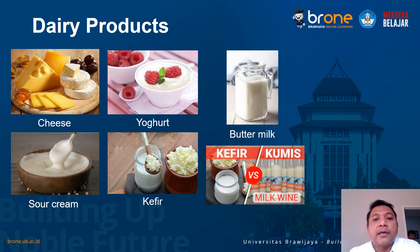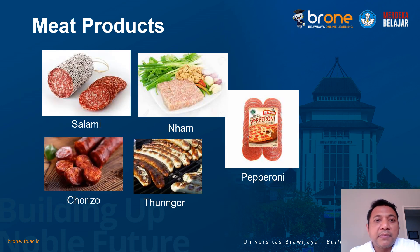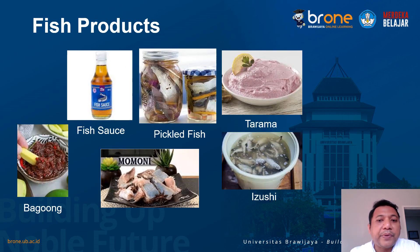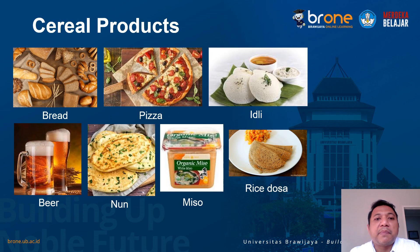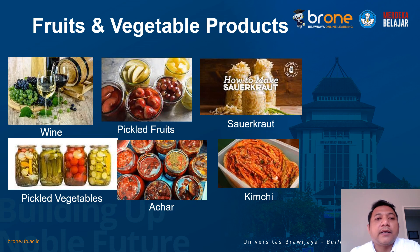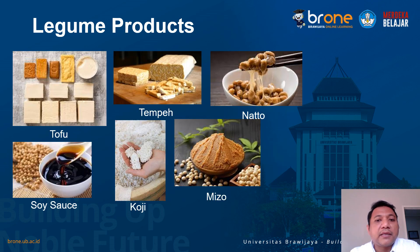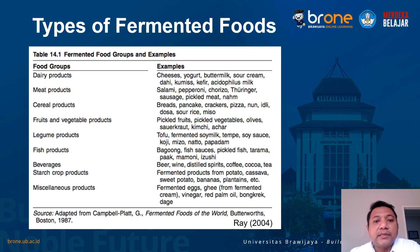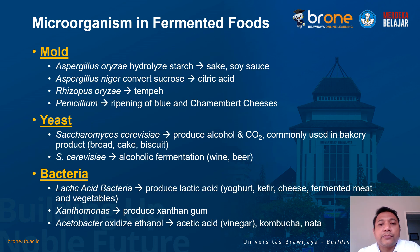Ini contoh-contohnya, mungkin ada yang tidak tahu kefir atau kumis. Kemudian produk berbasis meat product ada thuringer, nam, salami, pepperoni. Ada yang berbasis ikan, ada pickle, tarama, isushi. Ada yang berbasis sereal — mungkin ada yang belum tahu idli, rice dosa dari India, ada miso dari Jepang, ada nan. Berbasis buah sayur ada wine, pickle, sauerkraut, dan sebagainya. Ada acar di India. Berbasis kacang-kacangan ada natto yang lengket, miso, kecap, tofu, dan tempe.